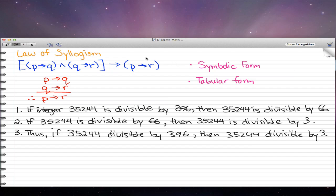Here's our symbolic form: P implies Q, and Q implies R, all that implies P implies R. This is the same thing in tabular form. We have P implies Q, Q implies R. All together, that indicates the conclusion would be P implies R.